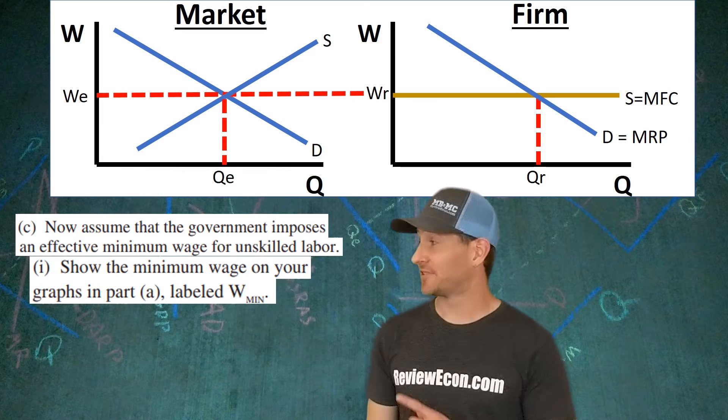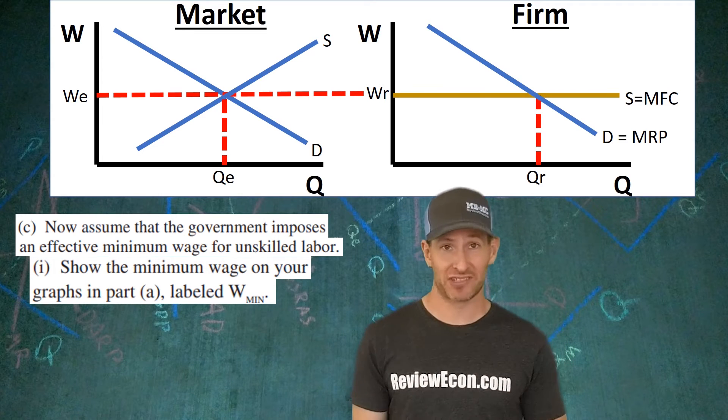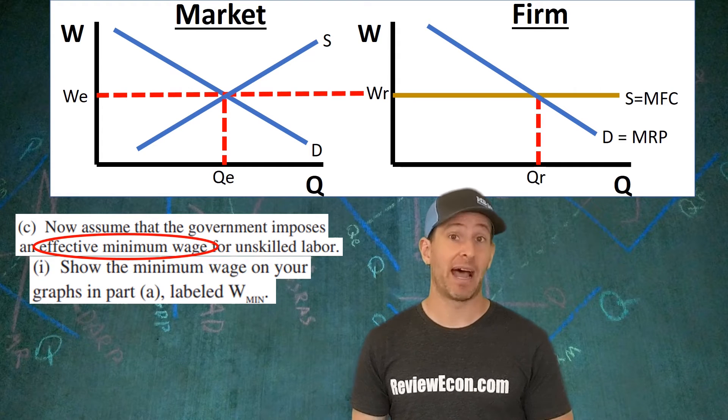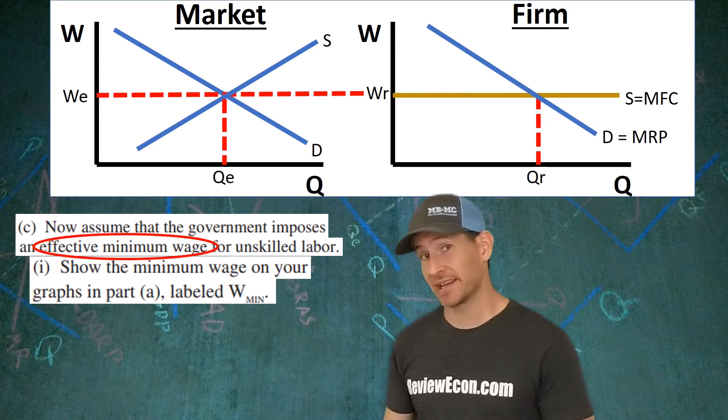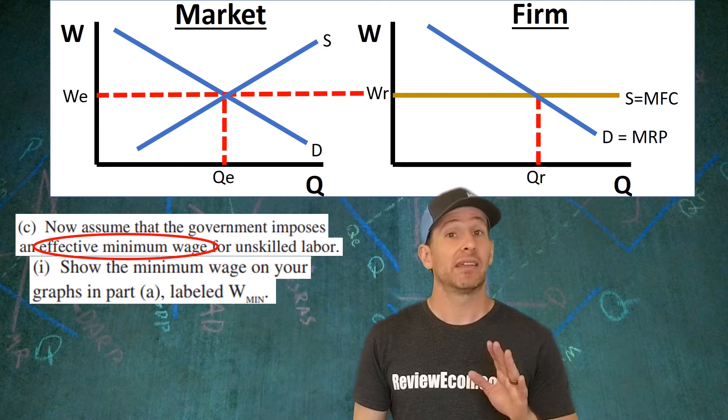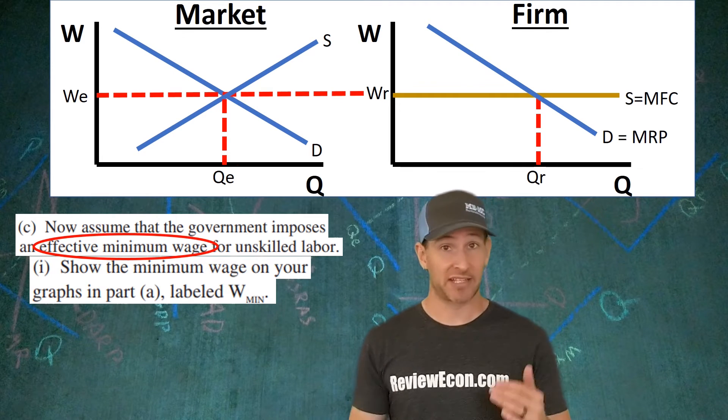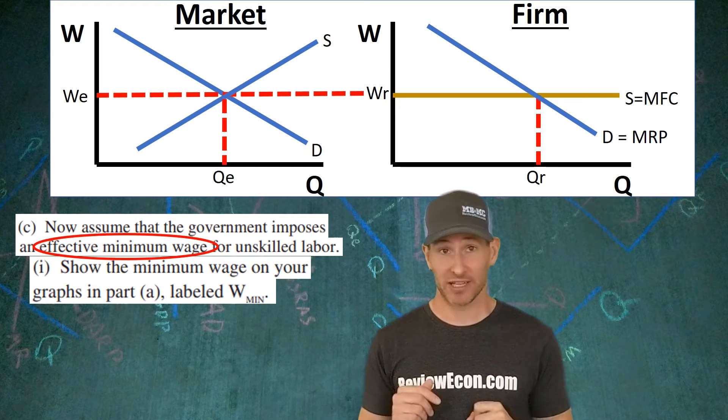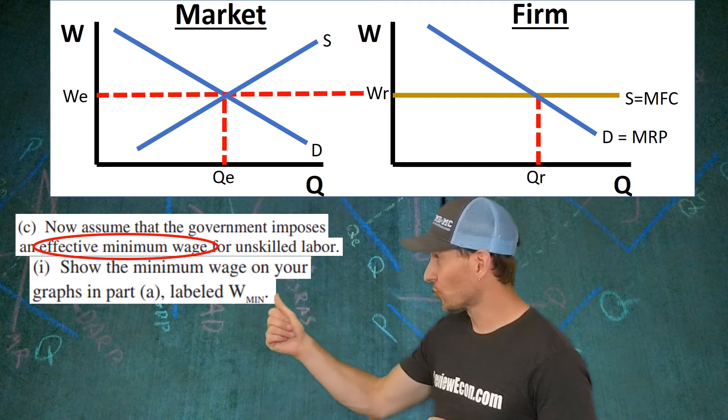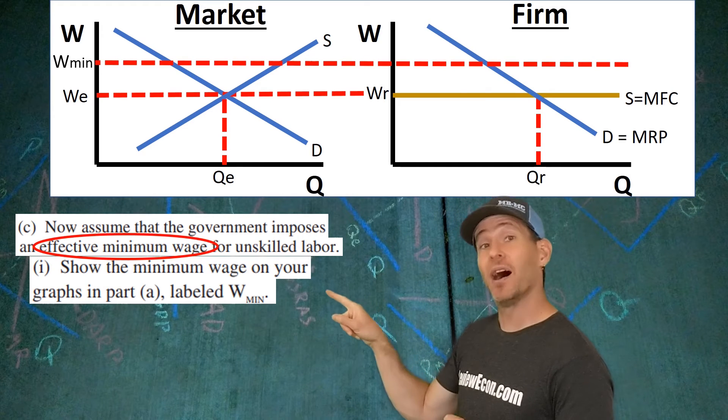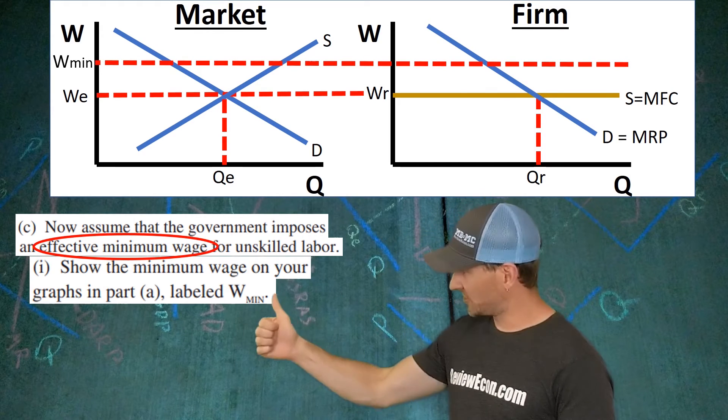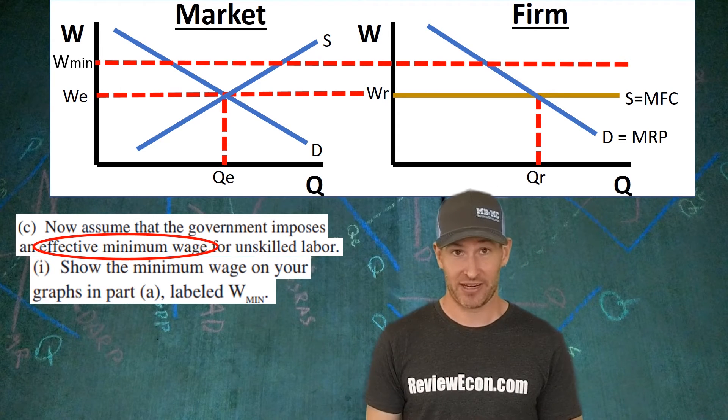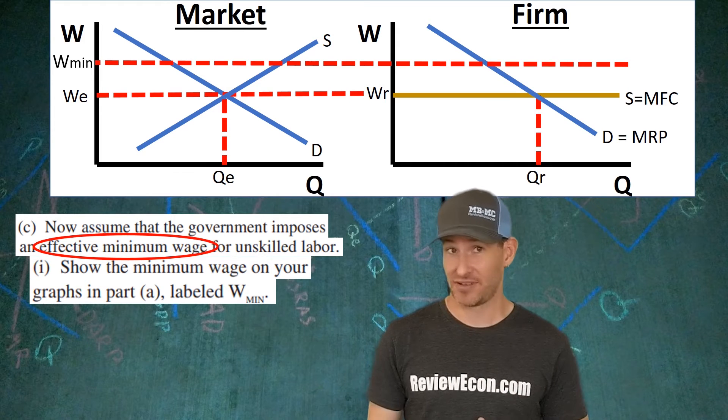For Part C, we have to show the impact on the graph if the government imposes an effective minimum wage. Effective means that it's binding, and it will actually do something. So we're not going to be at equilibrium anymore. A minimum wage is also a price floor. If you remember correctly, price floors go above equilibrium when they're effective. So draw in a minimum wage above the old equilibrium. I suggest you carry it on over to that firm graph. That's how you're going to get the point here. Anywhere above that old equilibrium.